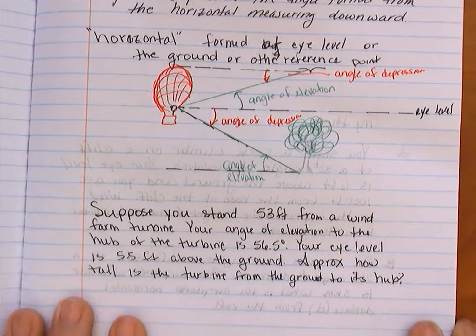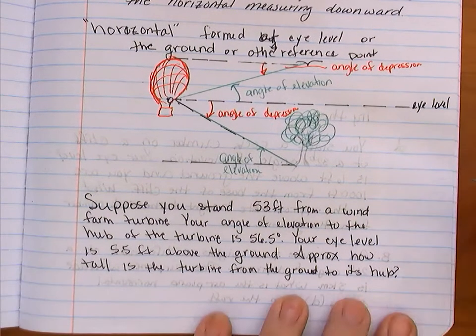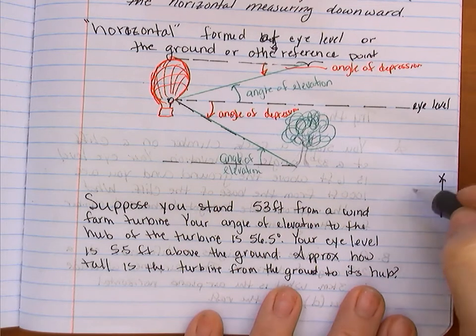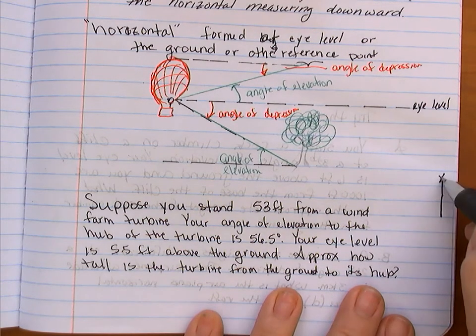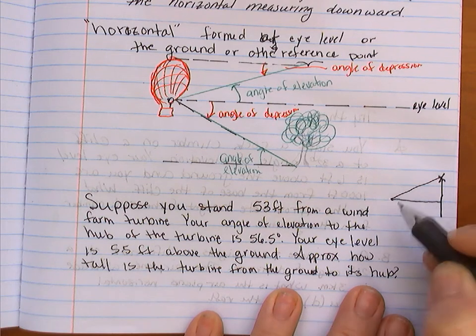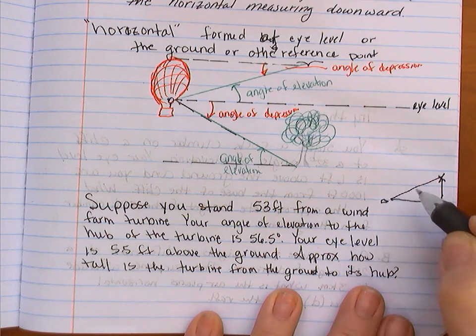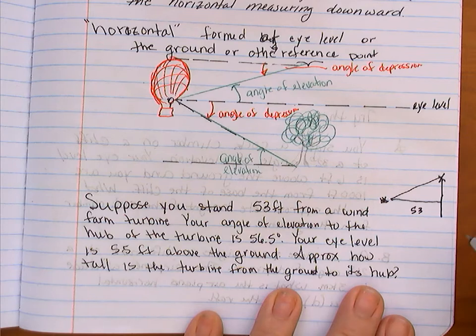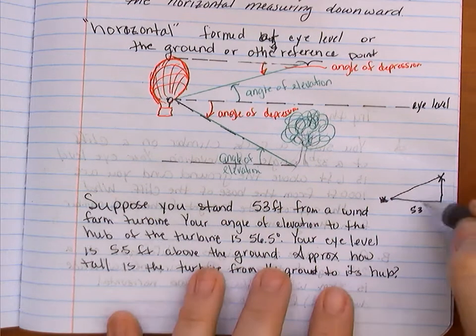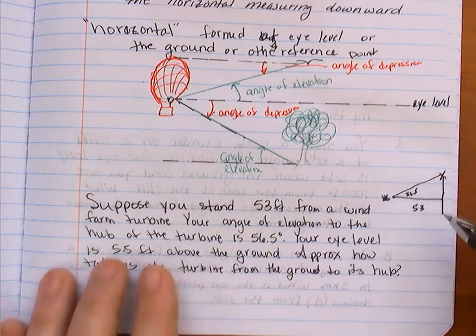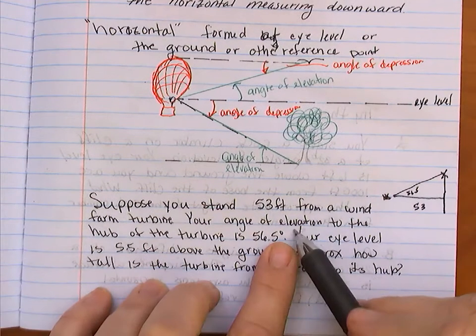So we're going to draw a little picture here. We're going to draw your little wind turbine. There you go. And then your person is over here. You're looking up into the wind turbine. You're standing 53 feet away. So this is your eyeball. You're standing 53 feet away. Put a little eye there and some lashes.